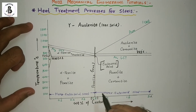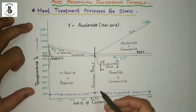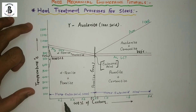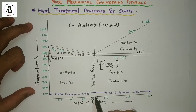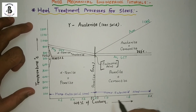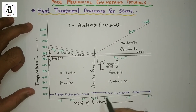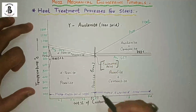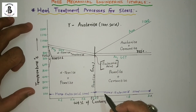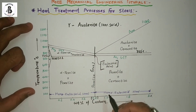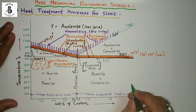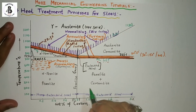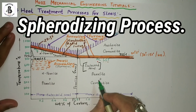Now, if you want to improve the properties of normal steels — whether hypo-eutectoid steel, eutectoid steel, or hyper-eutectoid steel — you will perform different heat treatment processes to enhance the mechanical properties of steels. In this video I would like to explain about the spheroidizing process.